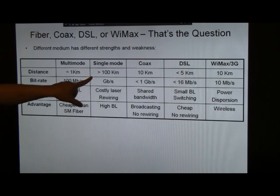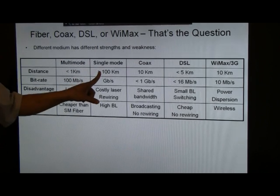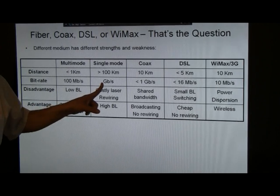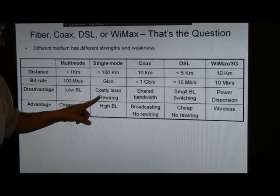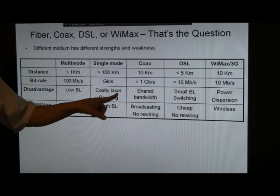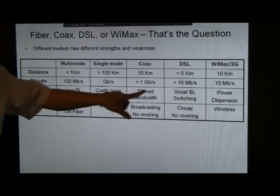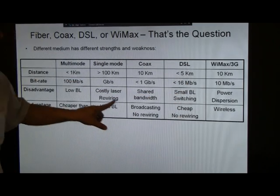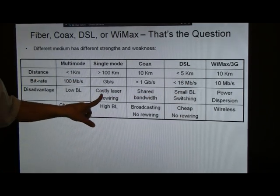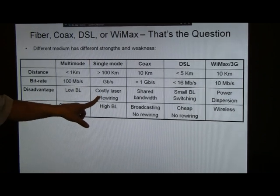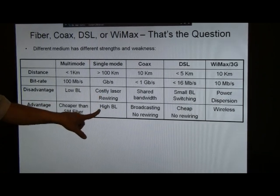For single-mode fiber, the distance can be greater than 100 kilometers, and the data rate can be as high as gigabits per second. The disadvantage is you have to use laser, and you also, compared to copper wires, need to do rewiring with optical cable rather than with a twisted pair. And the advantage, of course, is a very high bandwidth distance product.